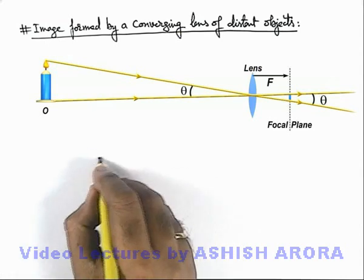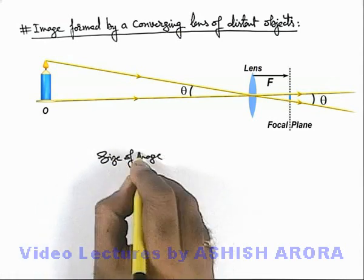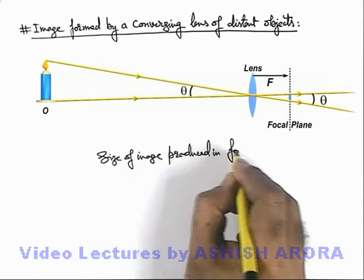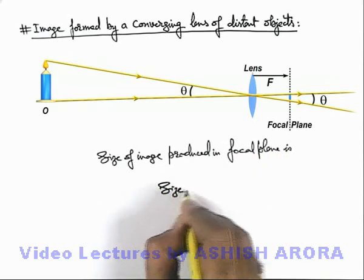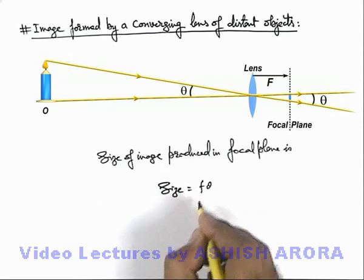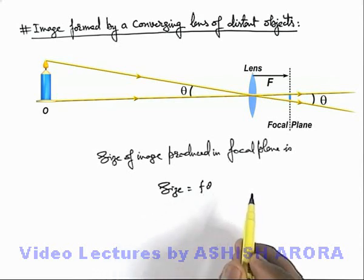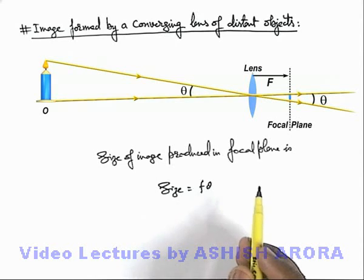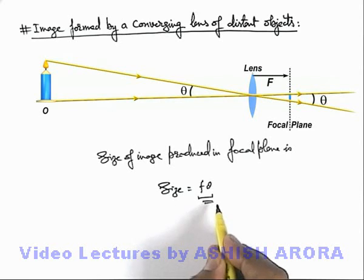So here in this situation we can directly write the size of image produced in focal plane. This size can directly be given as equal to f theta, because here this angle theta is very small and the image is produced in focal plane, so distance of image from lens is f. So for a small angle we can directly write the size of image will be equal to f theta. This relation can be directly used.